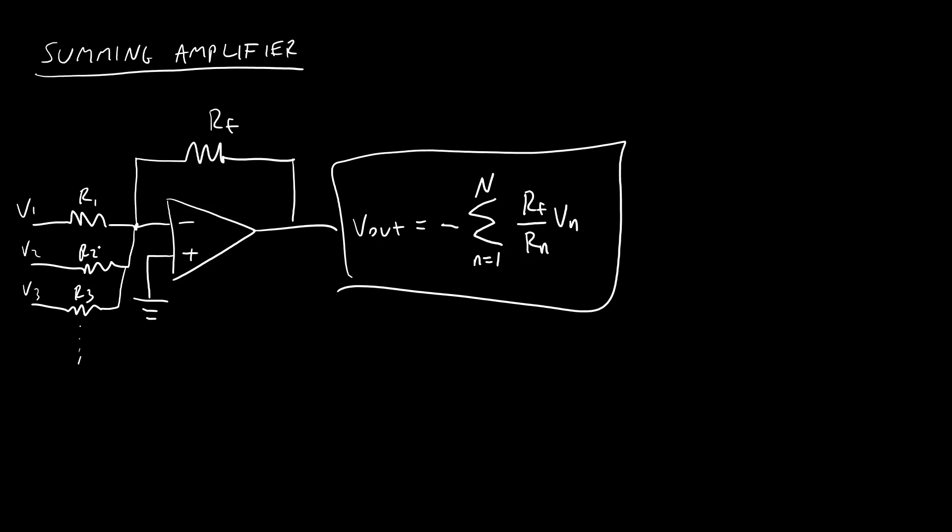...which, unlike the differential amplifier, which we just saw, do not have to be the same. You could make all of these the same if you just want to scale the voltages equally. And if you just want the output to be equal to the sum of the voltages, then you would make these individual resistors equal to the feedback resistor values so that this fraction is just 1. But by choosing different values of the resistors, you can scale them to different levels.